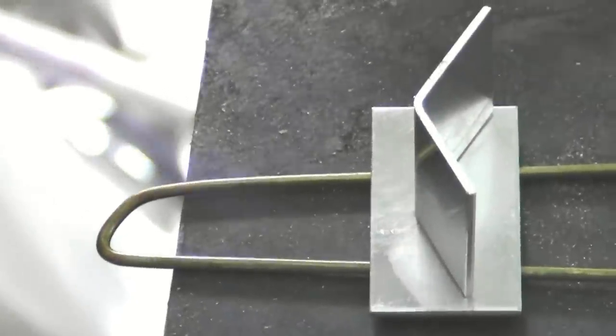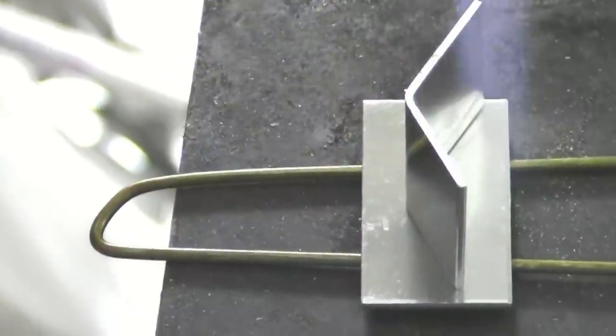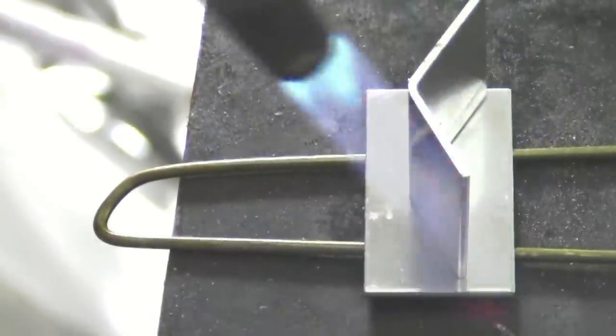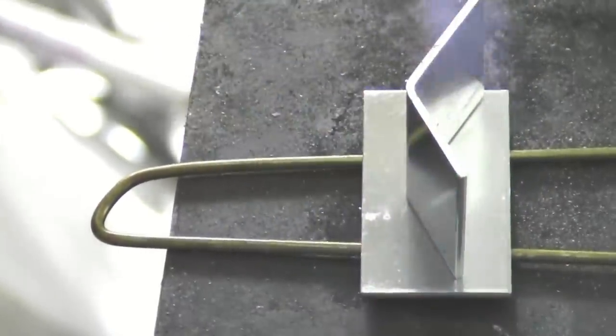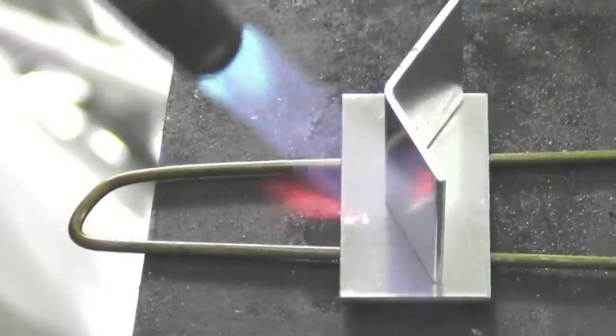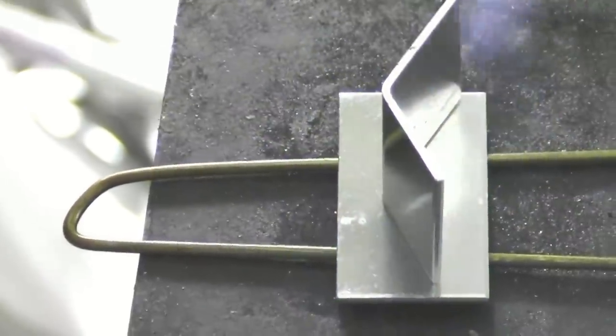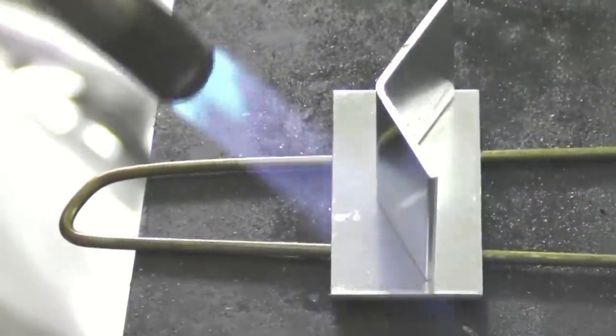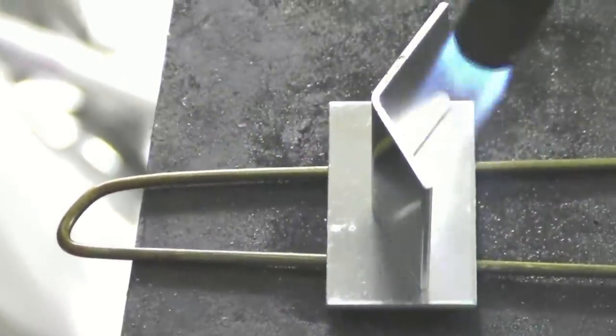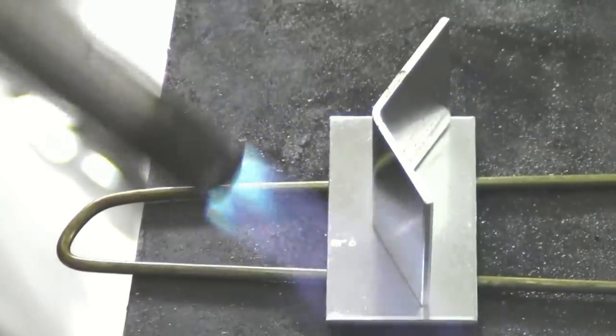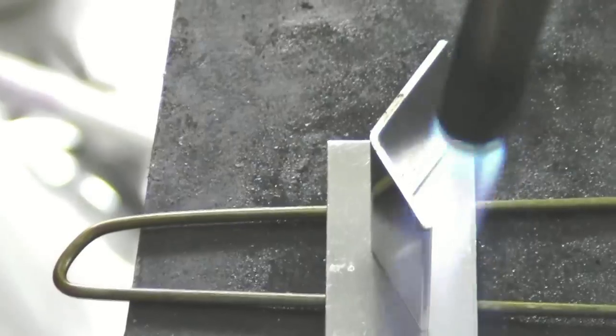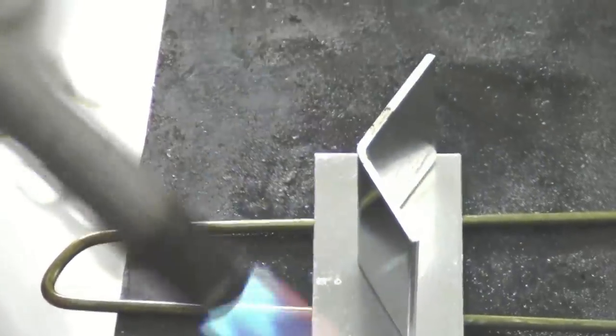We're working with two pieces of aluminum and our Super Alloy 5 rod and flux. Now the reason why I'm using this hanger wire is to get it away from this thick steel plate that we have. Otherwise it would take me forever to heat up that bottom piece of aluminum.